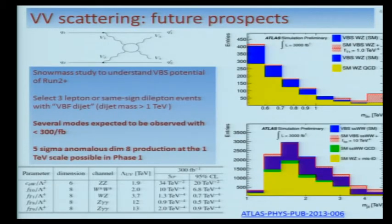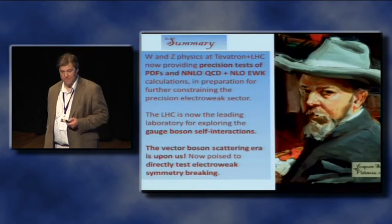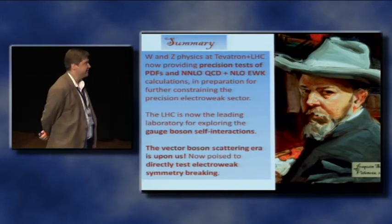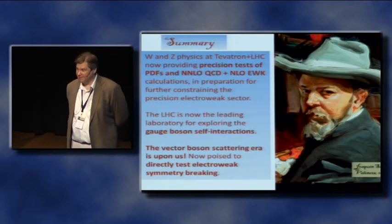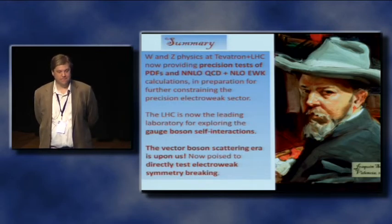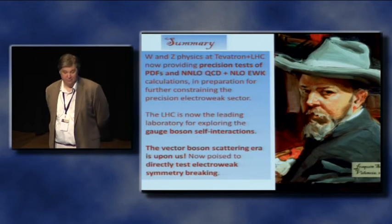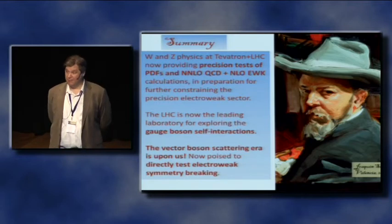The future prospects for vector boson scattering are great. Looking ahead to Run 2, several modes are expected to be seen including WZ, maybe opposite-sign WW, and others. There's even potential with the phase-one data alone to identify at the five-sigma level some kind of anomalous operators at the 1 TeV scale. To summarize: W and Z physics using tens of millions of events are giving ultra-precise tests of PDFs and quantum field theory calculations, in preparation for the final assault on precision electroweak measurements. The LHC is now the leading laboratory for understanding gauge boson self-interactions with diboson data approaching the TeV scale. And the great new news: the vector boson scattering era is upon us, and we are poised to directly test electroweak symmetry breaking in the future. Thank you.